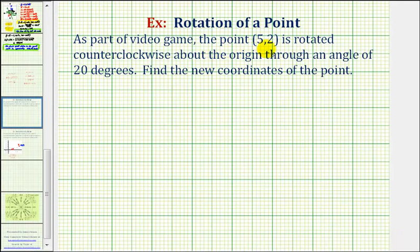As part of a video game, the point (5,2) is rotated counterclockwise about the origin through an angle of 20 degrees. We want to find the new coordinates of the point. To do this, we're going to sketch a vector with a terminal point of (5,2), then find the direction and magnitude of this vector. Then we'll rotate the vector 20 degrees counterclockwise and find the terminal point of this new vector.